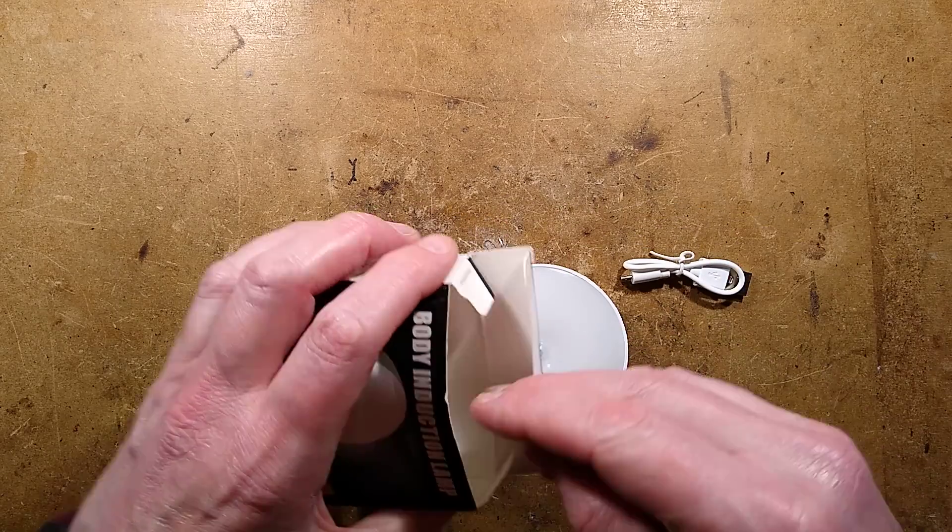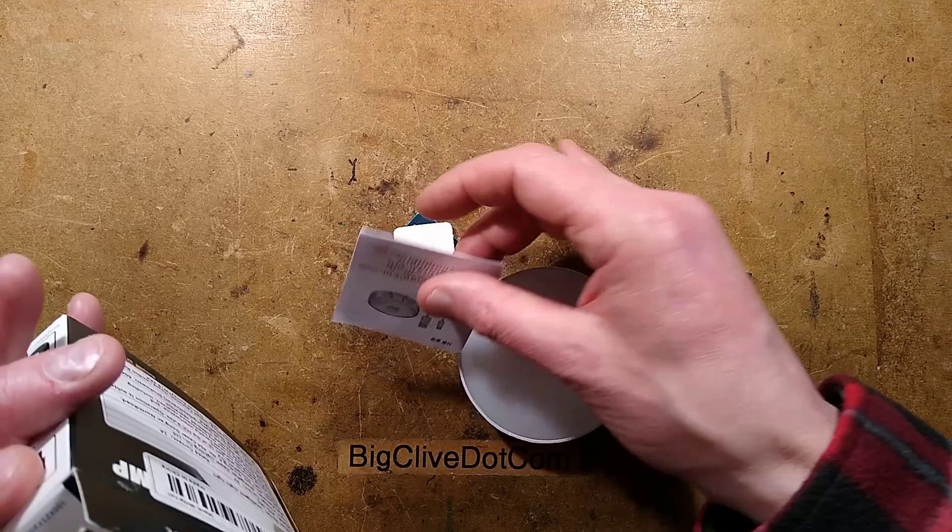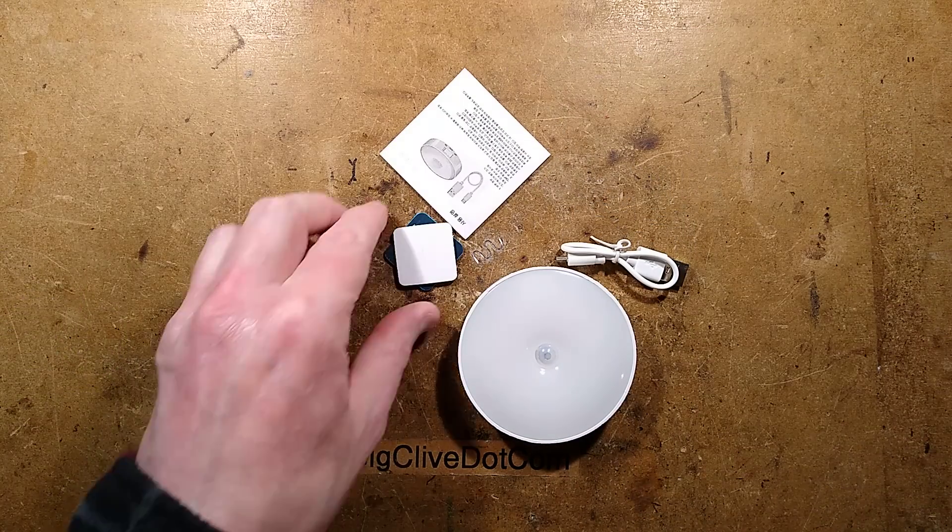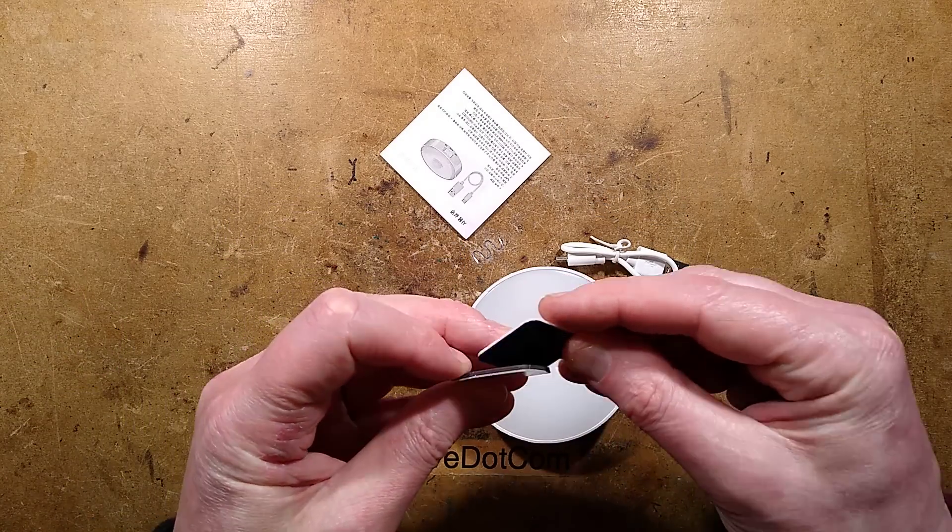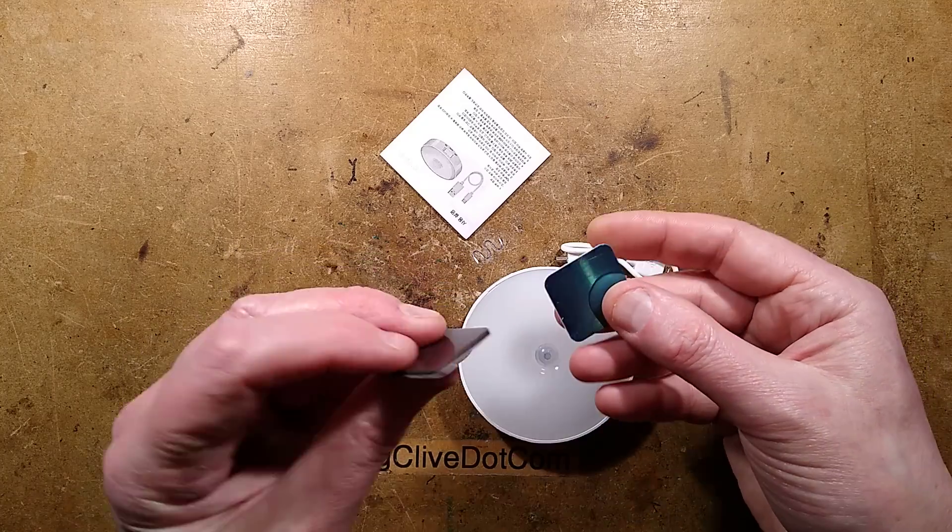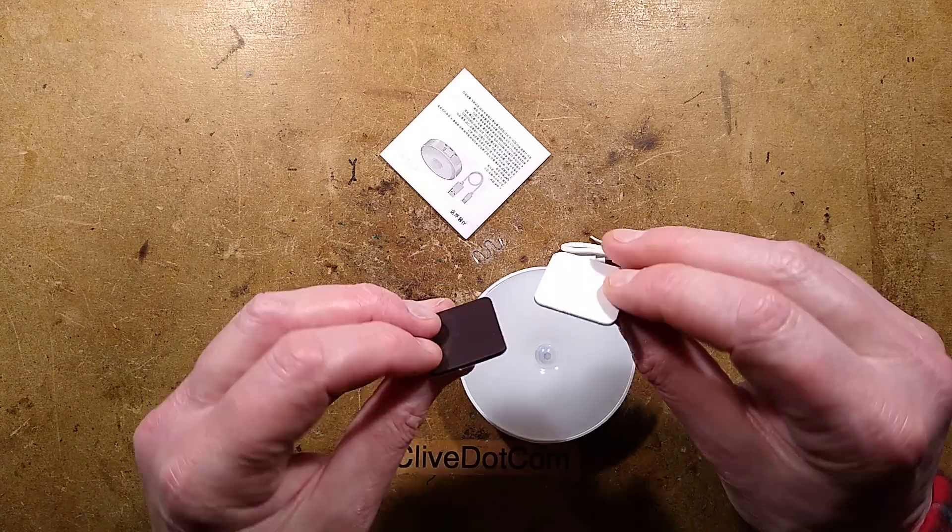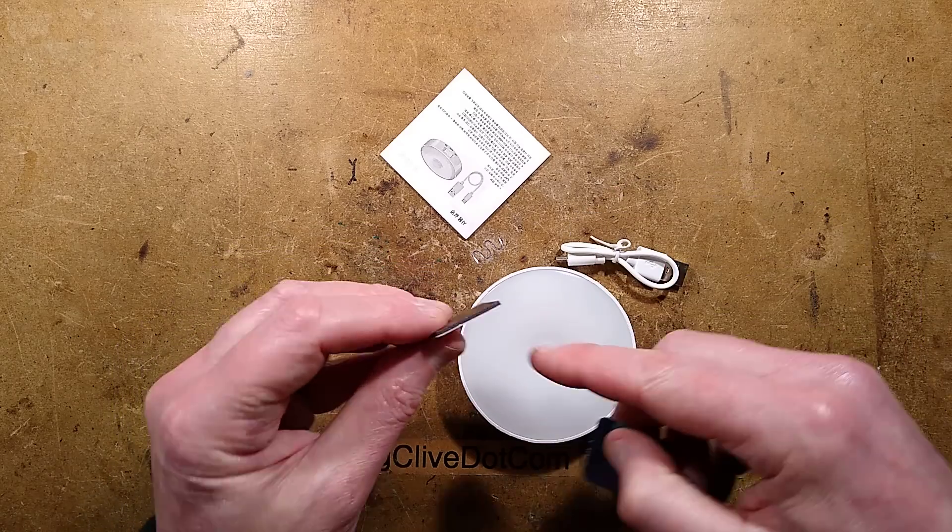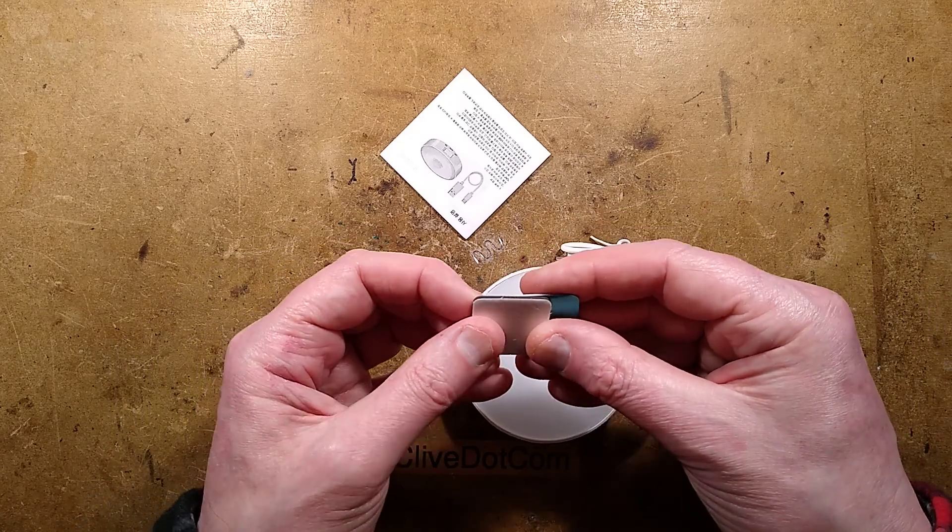So you get some instructions, you get a little tiny charging cable, and you get a couple of magnetic pieces. Well this one's magnetic, this is just a piece of steel with adhesive tape and you stick it onto your wall or ceiling and stick this onto the back of this and then you can just basically stick it to whatever you want.